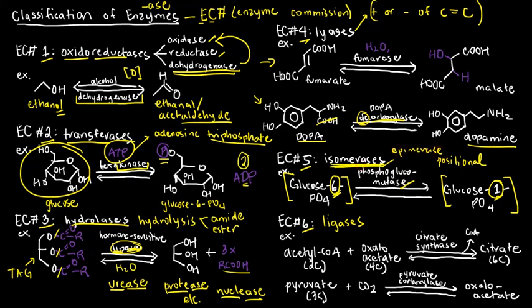Most isomerases actually just end in isomerase, so just like transferase, it's quite easy to detect. Finally, we have EC number 6, which are ligases, and ligation usually refers to condensation reactions. Remember, when we use the word condensation, it means joining together of two things with the loss of water.